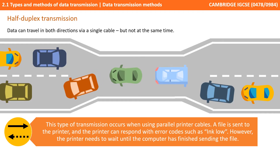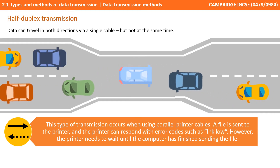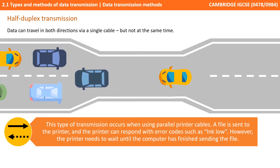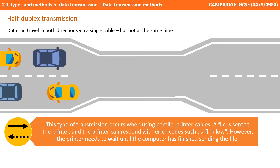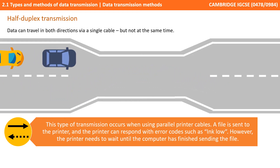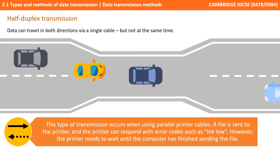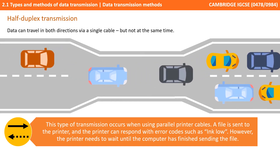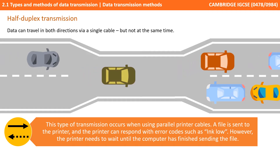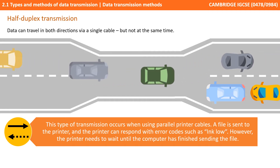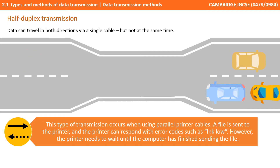Next comes half duplex transmission, where data can travel in both directions down a single cable, but not at the same time. This might occur when using parallel printer cables. A file is sent to the printer and the printer can respond with an error code such as INK LOW. However, the printer would have to wait until the computer had finished sending the file.